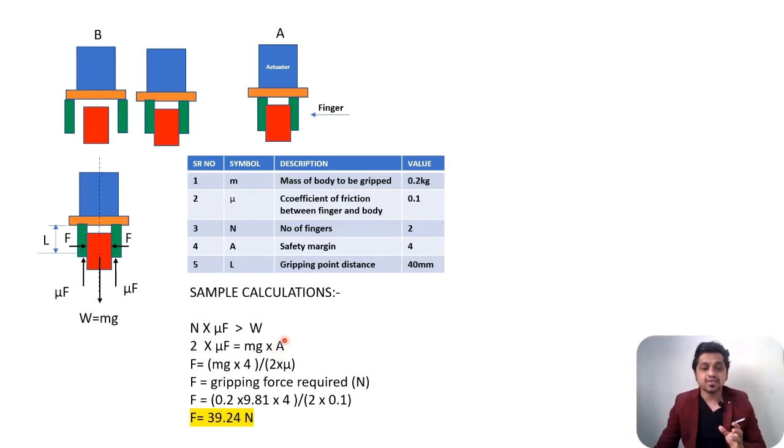I've introduced the safety factor here. This becomes: I have two number of gripping hands, then mu and F into weight will be mg times A. So what will be my force? F = mg times A divided by (2 times mu). This is the actual gripping force required.